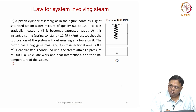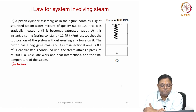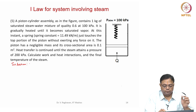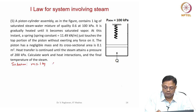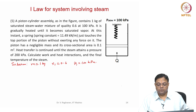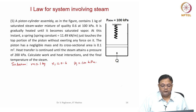Form number 5. A piston cylinder assembly as in the figure contains 1 kg of saturated steam water mixture with a quality of 0.6 at 100 kilopascals. It is gradually heated until it becomes saturated vapour.